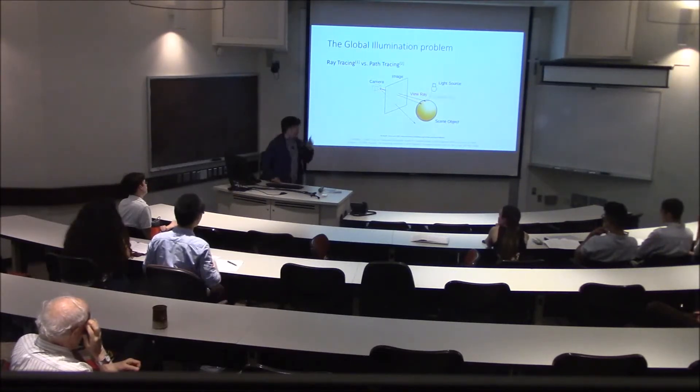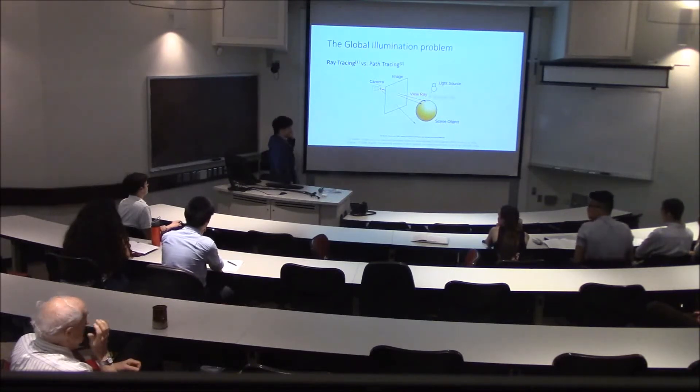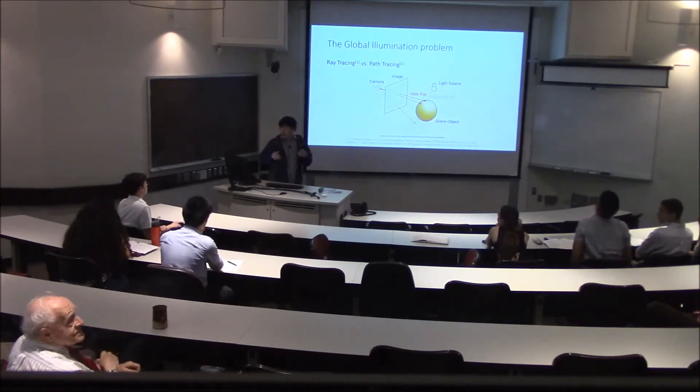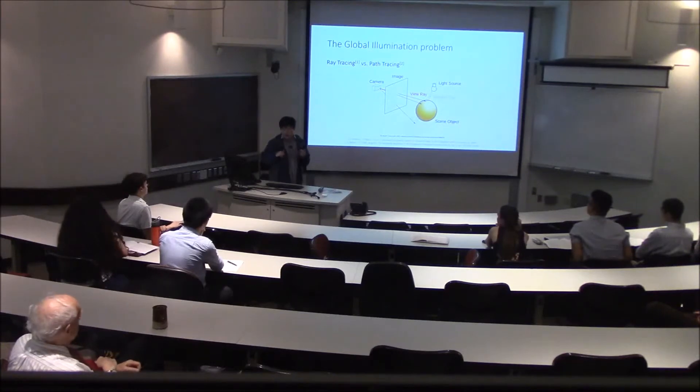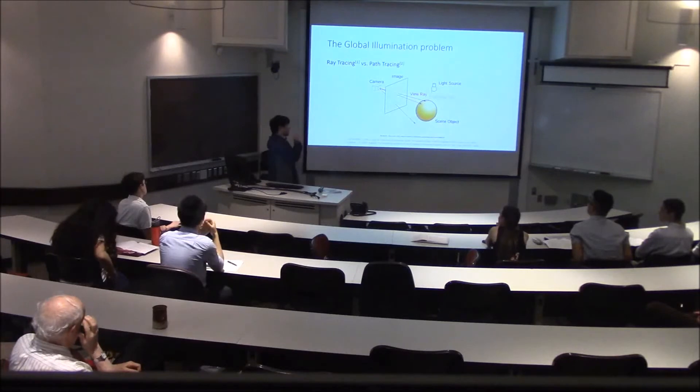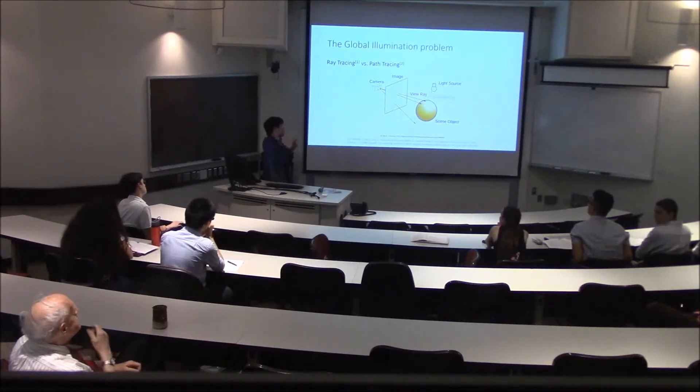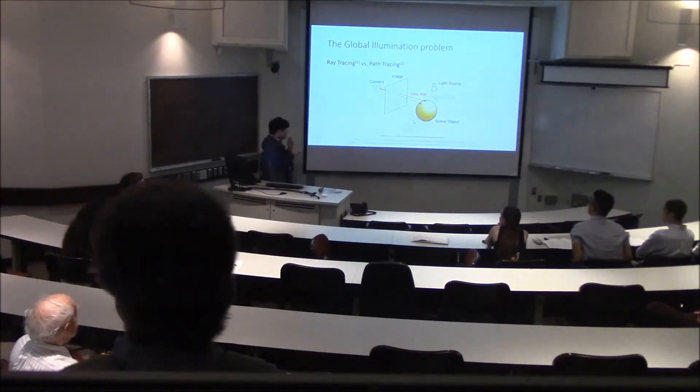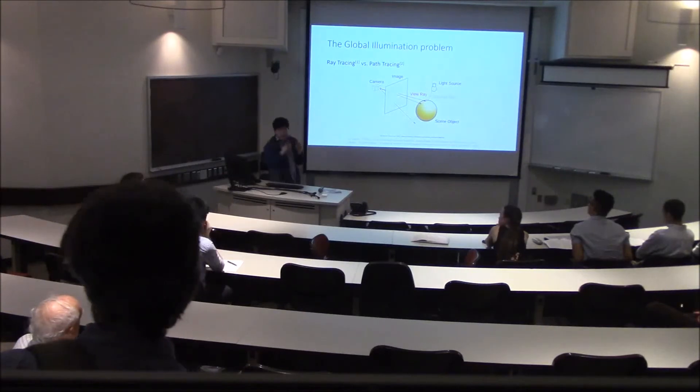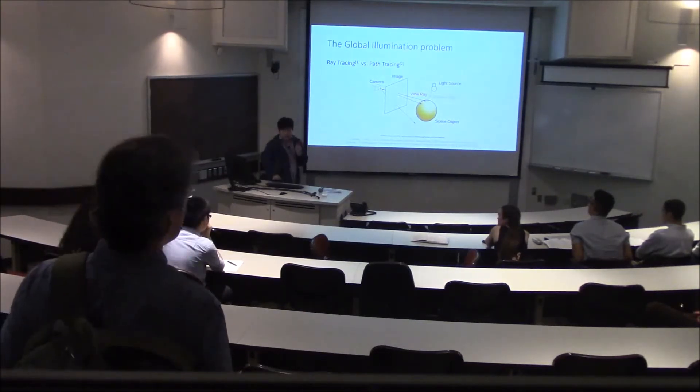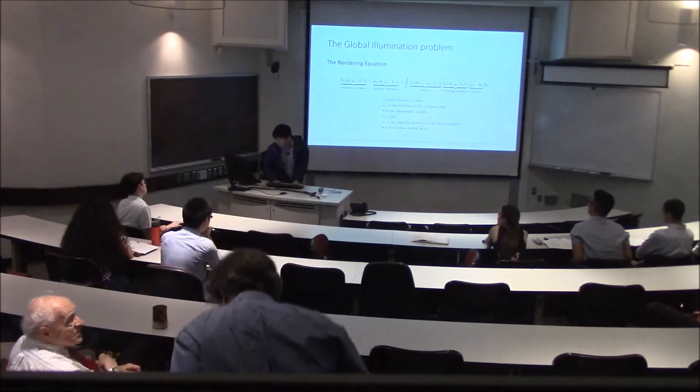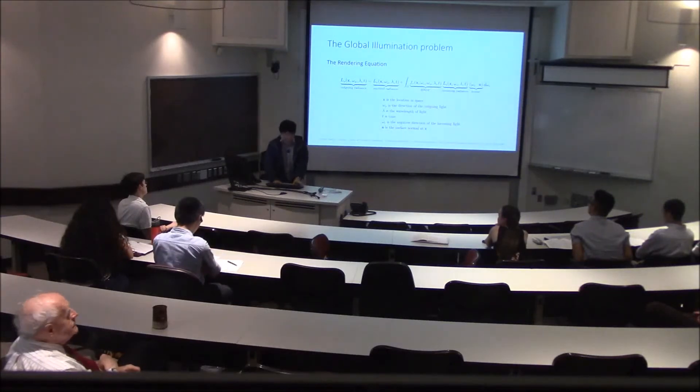In path tracing, essentially for every pixel we'll shoot thousands if not tens of thousands of samples. Then instead of checking whether or not it's exposed to a light, we'll bounce that about the scene for a set number of times. If it ends up reaching a light source we'll calculate that into the overall radiance.